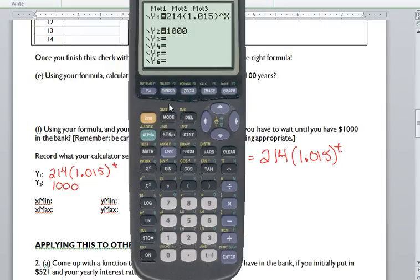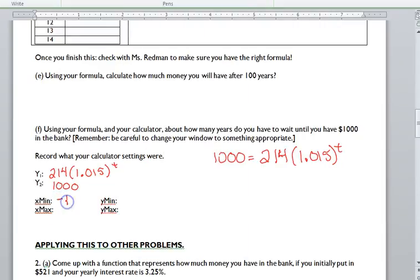Our X or T is representing years, so our X values probably shouldn't be negative. We don't need negative X values because X is representing number of years. Now I am going to put negative 1 just so that I can see my Y axis on the graph.